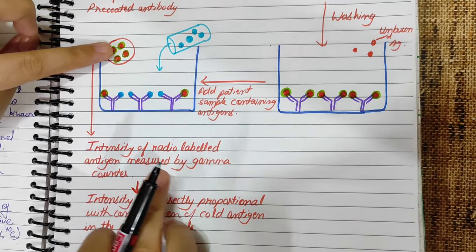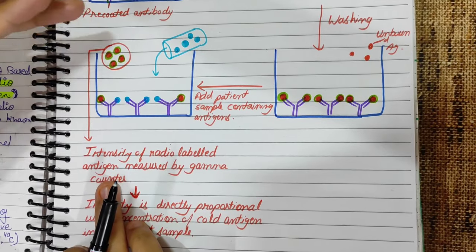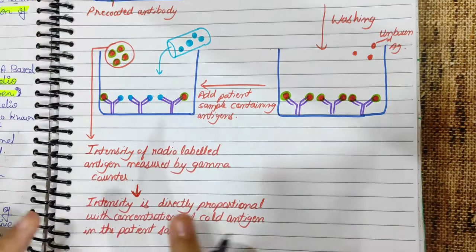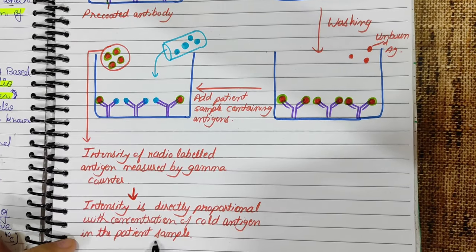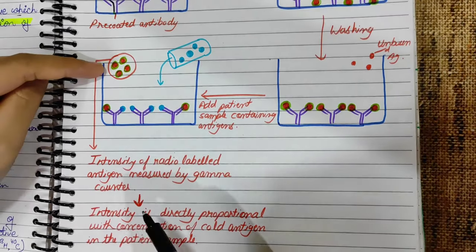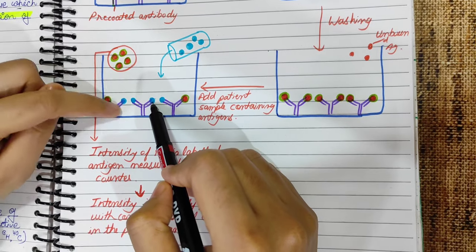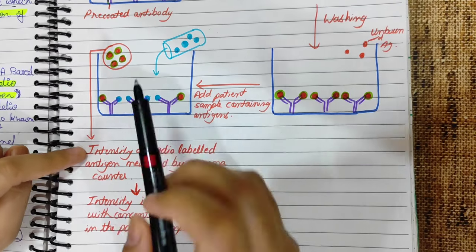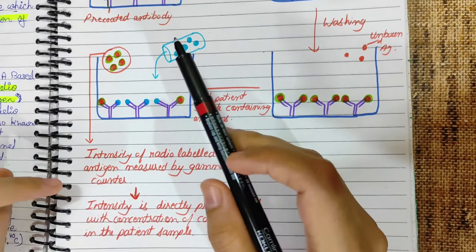If we measure the intensity, we can know how much hot antigen was released. The intensity is directly proportional to the concentration of cold antigen in the patient sample. The amount of cold antigen determines how much hot antigen is released, and thus the intensity tells us the concentration.